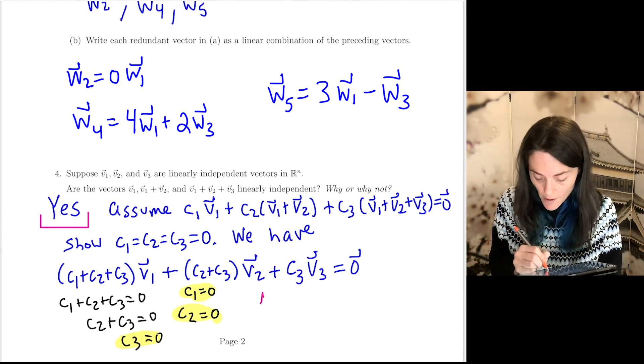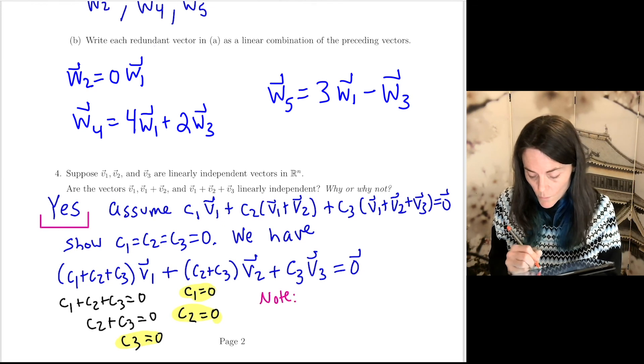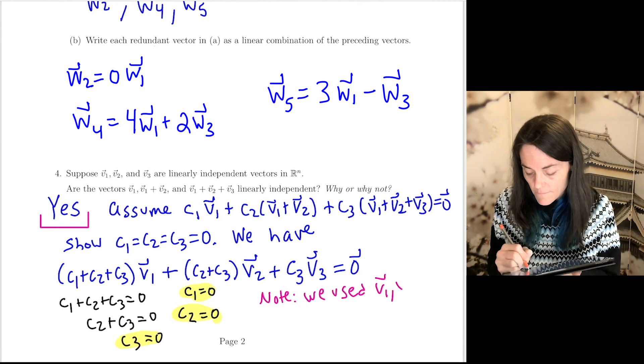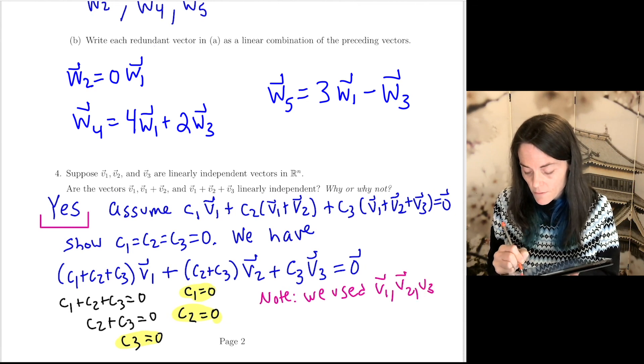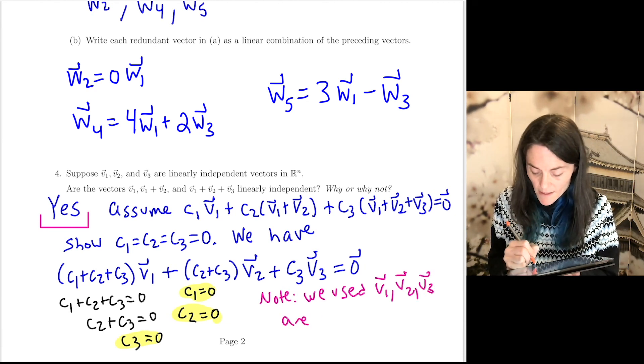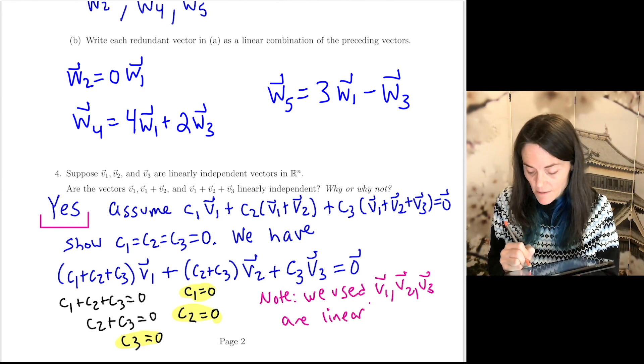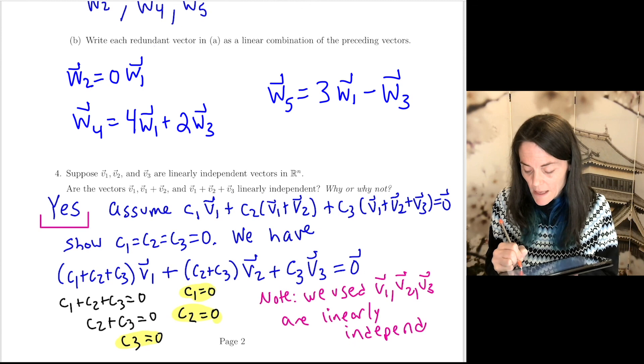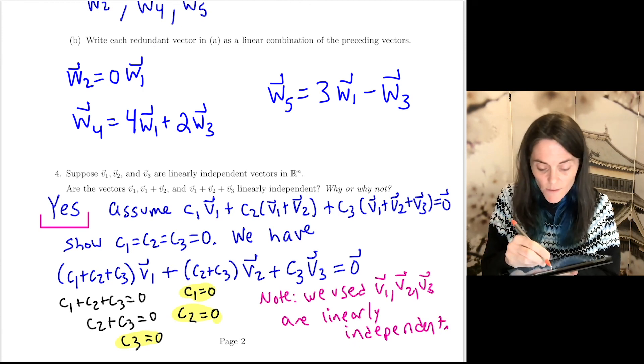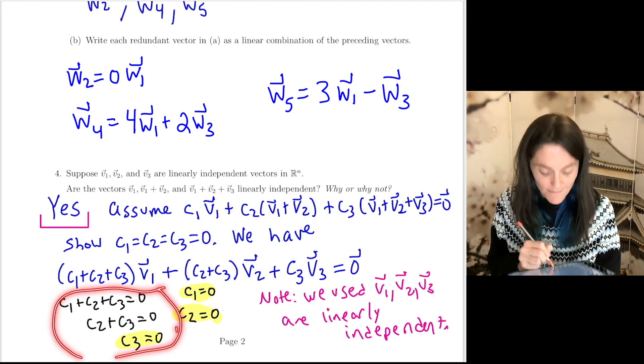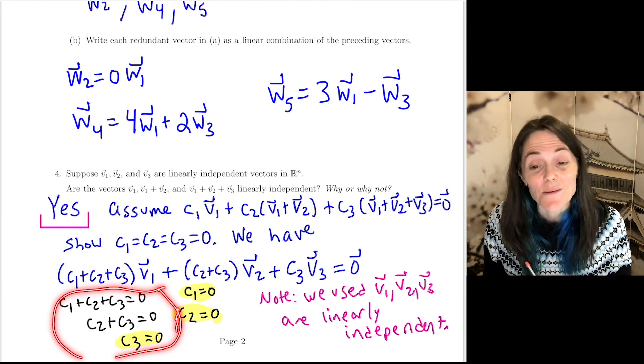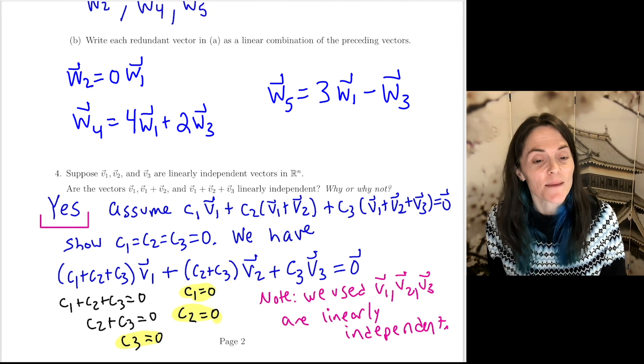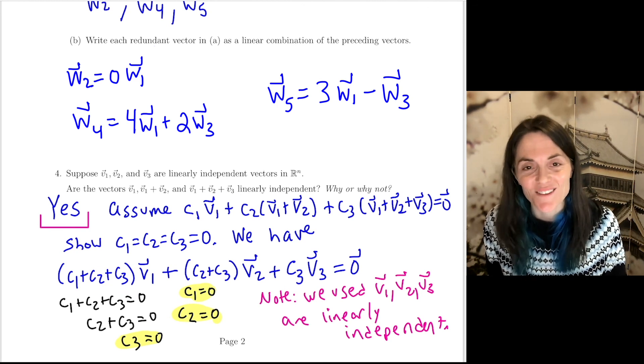Maybe I'll just make a remark. Note, we used that V1, V2, and V3 are linearly independent. That is what allowed me to conclude this part. So this one was a little bit abstract, this number four, but at the same time, I think it's a wonderful question for us to work through.